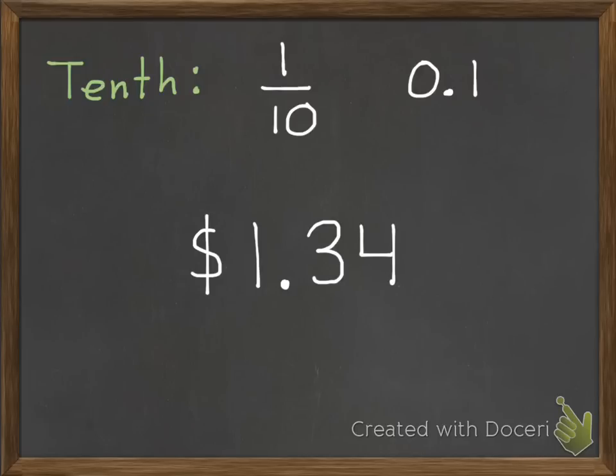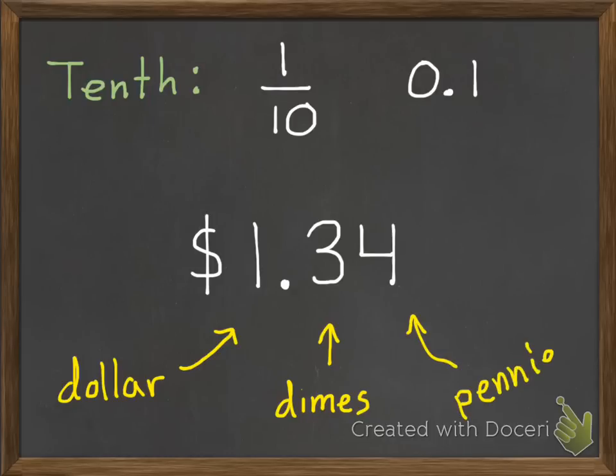One way to remember decimals is to think of money. So if I have a dollar and thirty-four cents, the one dollar would be our ones. The three would be like dimes, and those are our tenths. It takes ten dimes to make one dollar. Then we also have pennies, which are like our hundredths, which we'll get to next.